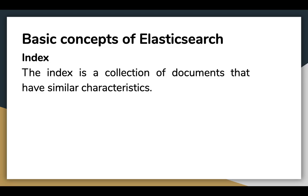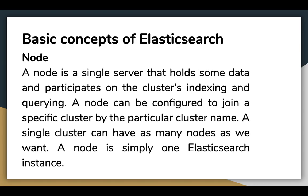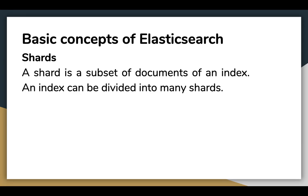Next is the index. The index is a collection of documents that have similar characteristics. Next comes node. A node is a single server that holds some data and participates in the cluster indexing and querying. A node can be configured to join a specific cluster by the particular cluster name. A single cluster can have as many nodes as we want. A node is simply one Elasticsearch instance. Next is shards. A shard is a subset of documents of an index. An index can be divided into many shards — as seen in the previous diagram where an index is divided into shard 1 to shard N.